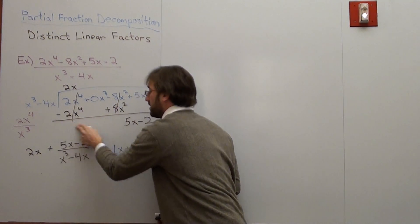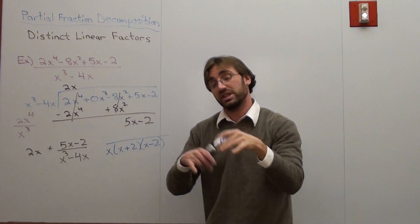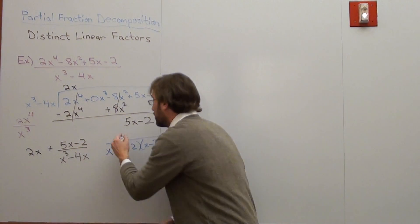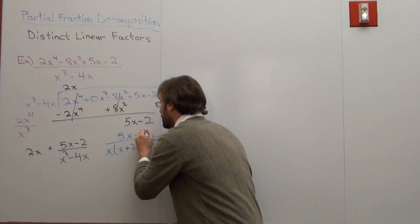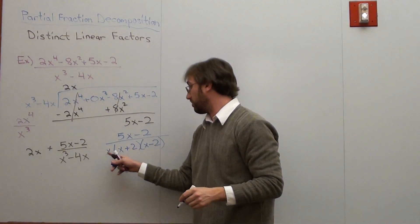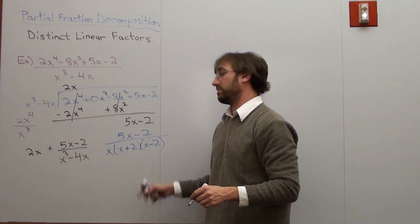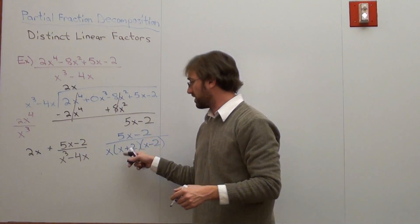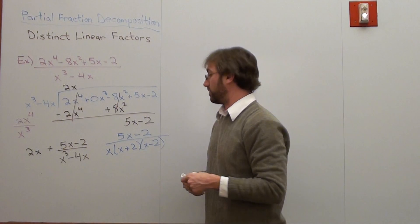So actually, when we're doing decomposition of fractions, pardon me, partial fractions, we're actually going to have 5x subtracted by 2 over x times x plus 2 times x minus 2. Again, ignore the 2x for right now. And we're going to turn this into separate fractions.